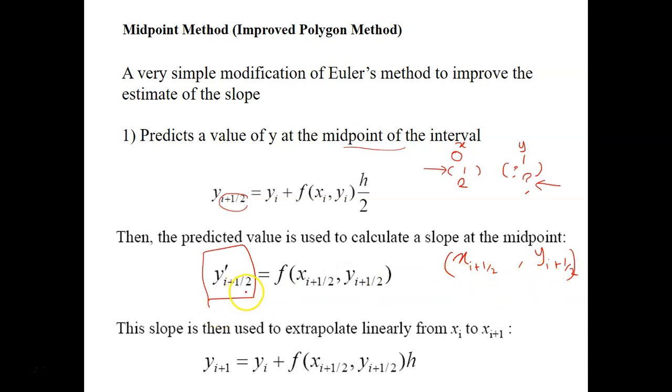Then we use this slope in order to find the value of y when x equals 2, the one that we are looking for. So this slope is used to extrapolate linearly from x_i to x_(i+1). So y_(i+1) equals y_i plus the slope here times h. Let's look at the example.